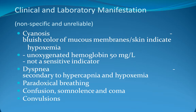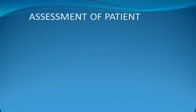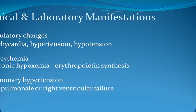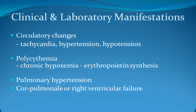Cyanosis is a bluish discoloration of mucous membranes and skin indicating hypoxemia with deoxygenated hemoglobin of 50 g per litre; it is a non-sensitive indicator as there are various causes of peripheral cyanosis. Patients may have dyspnea secondary to hypercapnia or hypoxemia, confusion, somnolence, coma, and convulsions. Assessment involves careful clinical history, physical examination, ABG, and classification of respiratory failure. Circulatory changes include polycythemia and pulmonary hypertension causing cor pulmonale or biventricular failure.